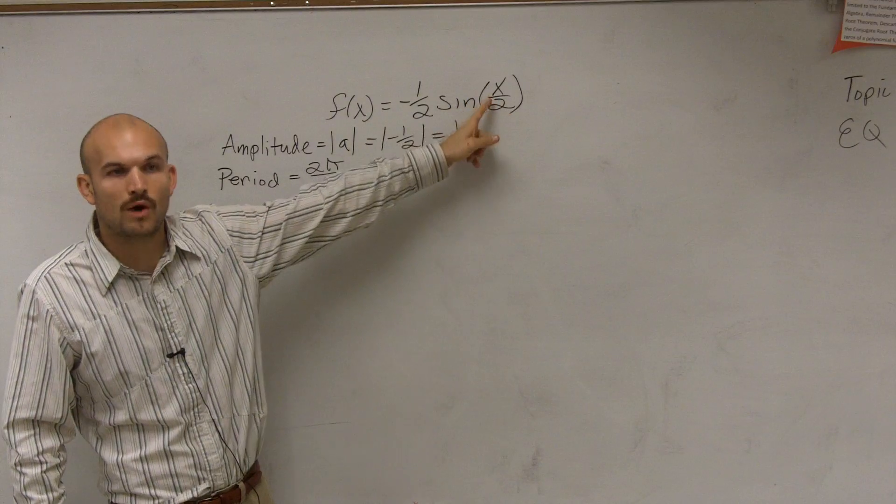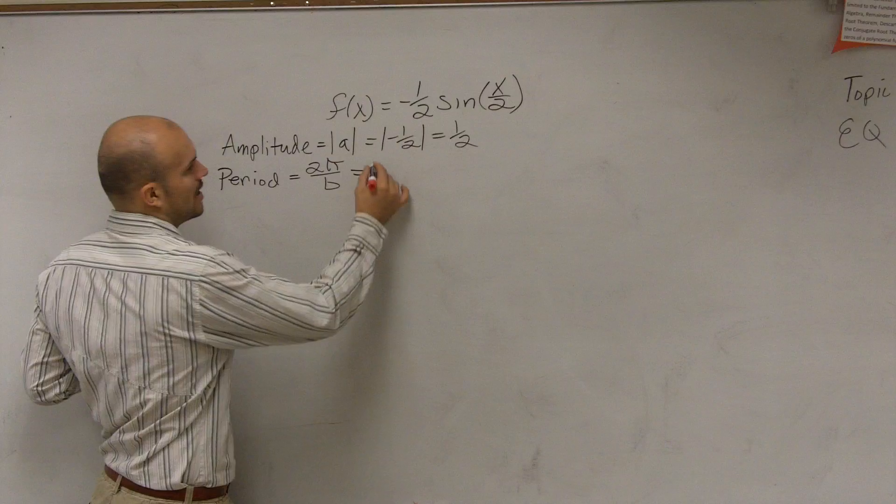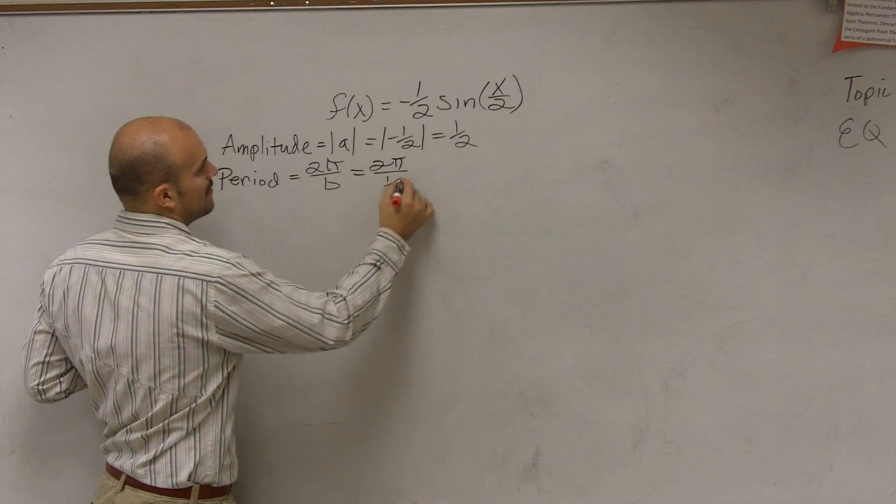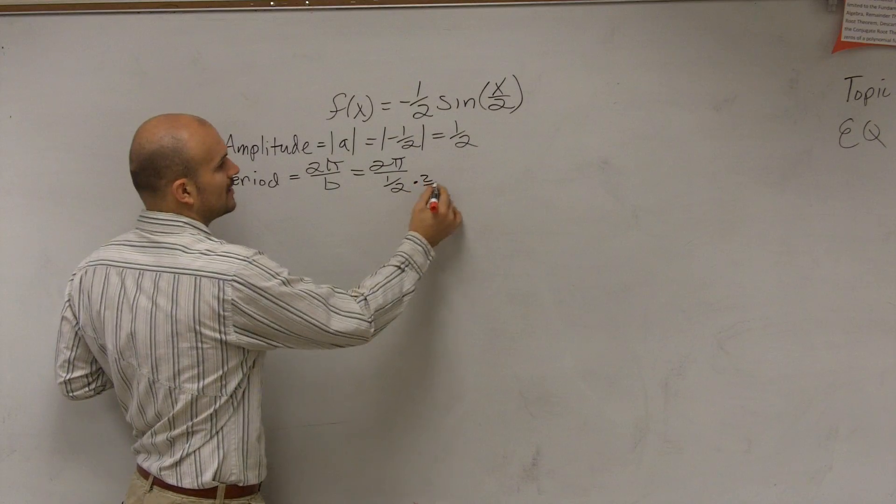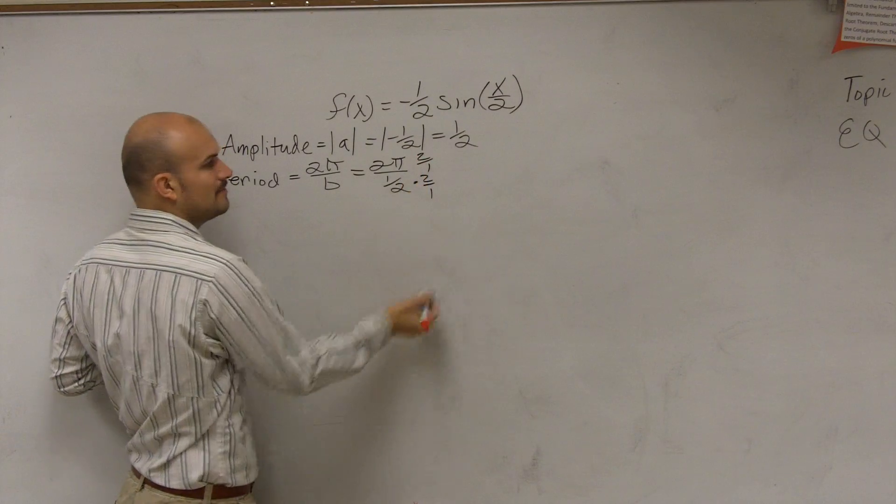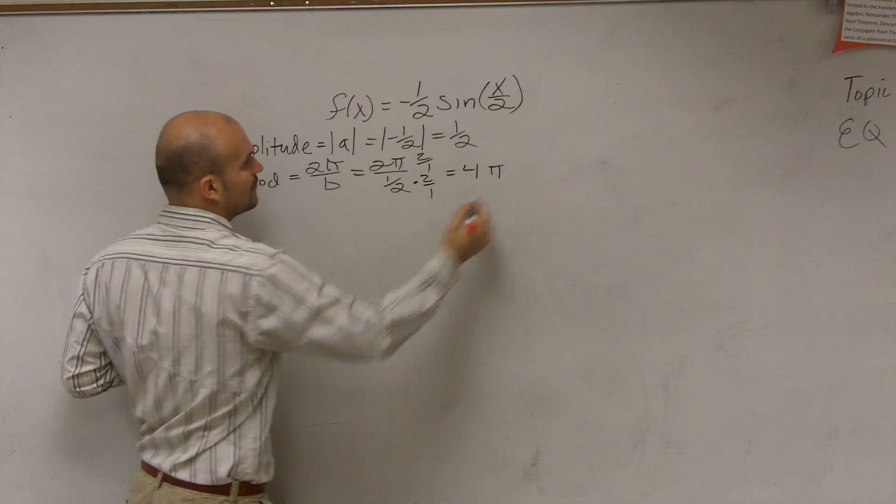Well, the coefficient of x is one, one being divided by two. So therefore, I have 2π divided by one half. So to solve for my period, I need to make sure I multiply by the reciprocal on the top and the bottom. That multiplies the one, and then I'm left with a period of 4π.